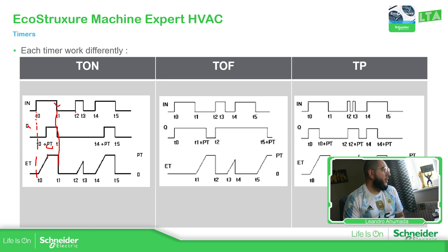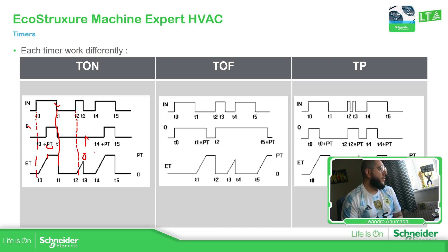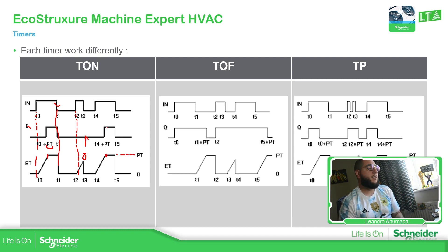Now a situation could be that you activate the input but it doesn't reach the PT — the time is lower. In that case there is no activation of the Q. Then if you activate again and it reaches the value of PT, as you can see the Q will activate. Simple as that. This is the T-ON.